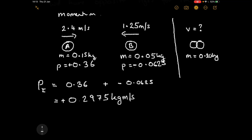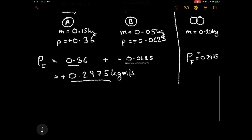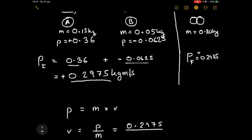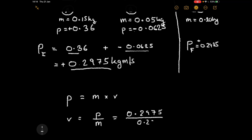The result is still positive because 0.36 is fundamentally bigger than 0.0625 — we've decreased the momentum a little bit. The final momentum equals the initial momentum, so the final momentum is 0.2975, and it's positive.